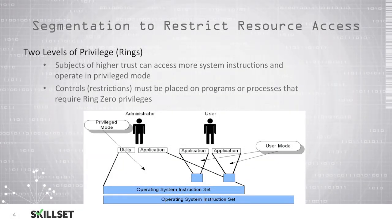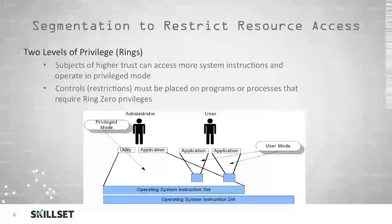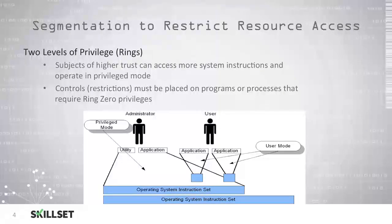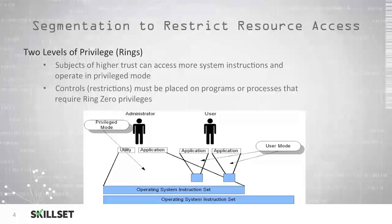Users in a higher trust level, such as administrators, are provided access to more system instructions and operate in a privileged mode. We should make sure that controls or restrictions are placed on any programs or processes that require ring 0 privileges, because these processes can cause a lot of damage in our systems if we allow them to execute in ring 0 and they are malicious.